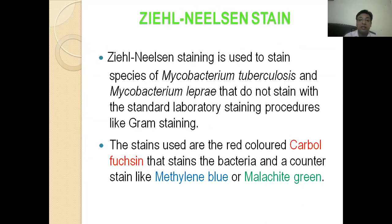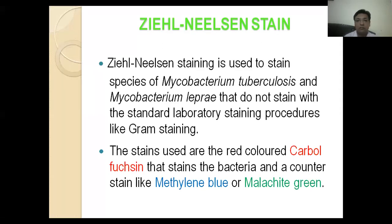Ziehl-Neelsen staining is used to stain species of Mycobacterium tuberculosis and Mycobacterium leprae that do not stain with standard laboratory staining procedures like Gram stain. The stains used are the red-colored carbol fuchsin that stains the bacteria, and a counterstain like methylene blue or malachite green.